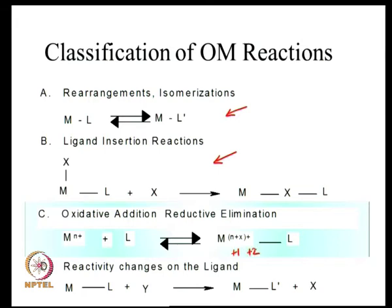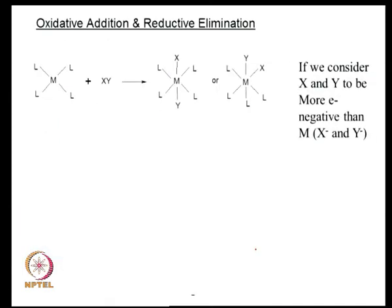In the reverse reaction, correspondingly, you would have a reduction in the oxidation state of 1 or 2. These reactions are very interesting and are unique to transition metal chemistry, because it is only among the transition metals that you find a variable oxidation state, where different oxidation states have relatively similar energies. Let us take a look at oxidative addition.